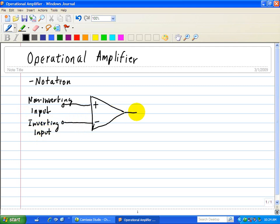We also have an output as a result of those two inputs, and then we have the power supply terminals. The top is usually reserved for the positive power supply, and the one at the bottom is the negative power supply.